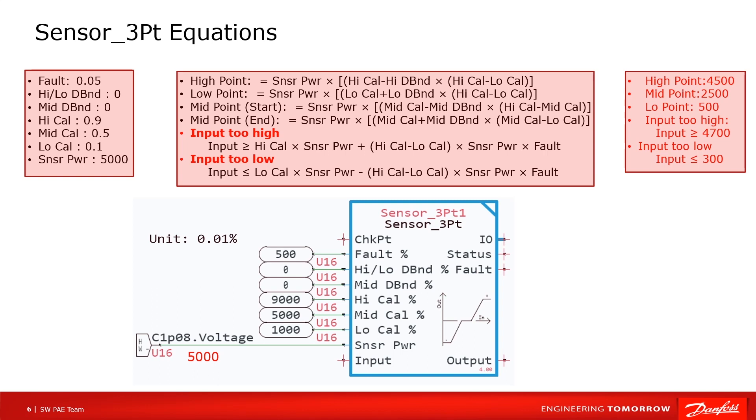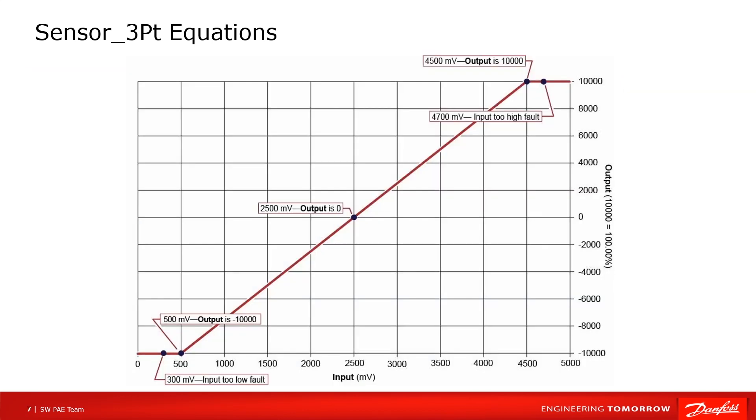Error of input. Error of input too high happens when input exceeds 4700. Error of input too low happens when input is below 300. Then we can get the trace according to the calculation result.